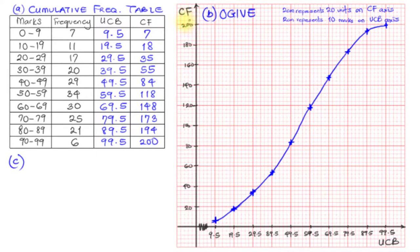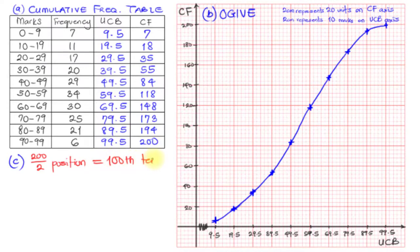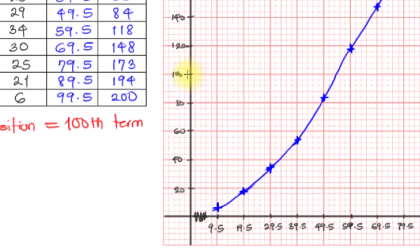Here is my cumulative frequency curve. The median mark will be at the 200 over 2 position — that will be the 100th term. So we are looking for the 100th term. 200 over 2 is 100. Here on the cumulative frequency axis, this is 100.